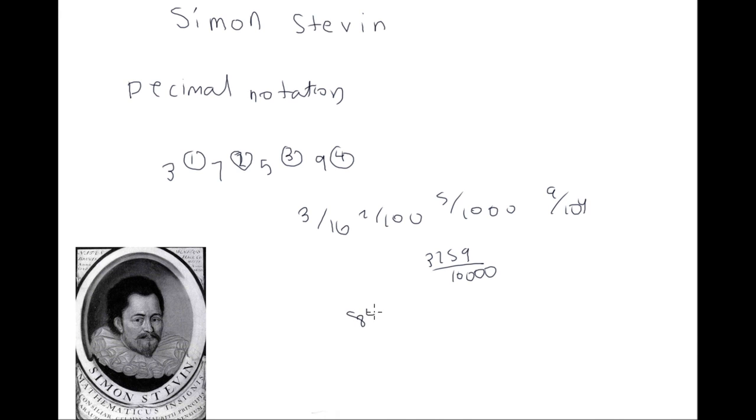Likewise, 8 (0), 9 (1), 3 (2), and 7 (3) has a value 8, 9 by 10, 3 by 100, and 7 by 1000, making this number 8937 by 1000, and so on for other numbers.